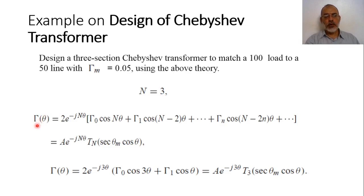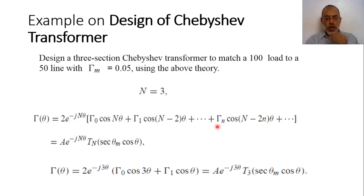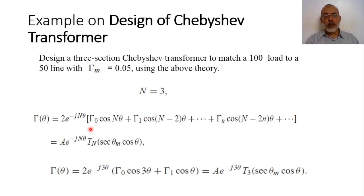The general formula obtained from the previous video is: the reflection coefficient of an n-section transformer is 2·e^{-jnθ} multiplied by [γ_0·cos(nθ) + γ_1·cos(n−2)θ + ...]. It should be noted that the transformer is symmetric, such that γ_0 = γ_n and γ_1 = γ_{n−1}, so solving this equation introduces only half of the required reflection coefficients.